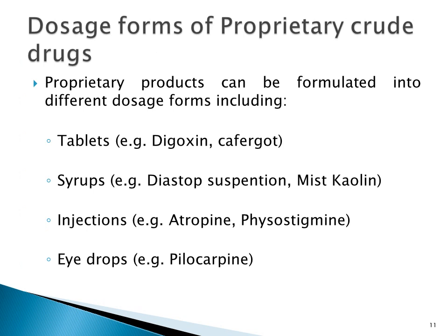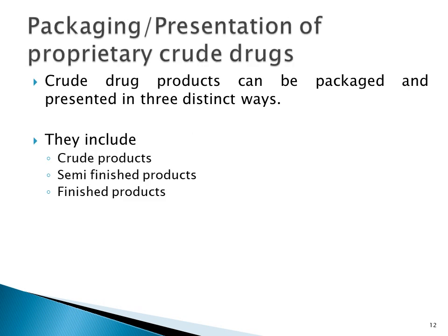The dosage forms in which we can find proprietary crude drugs include tablets — examples being Digoxin and Cafergot — syrups such as suspension and miscauling, injections such as atropine and physostigmine, and eye drops such as pilocarpine.